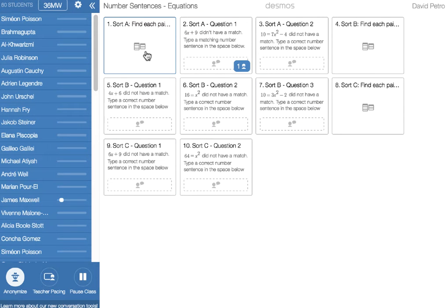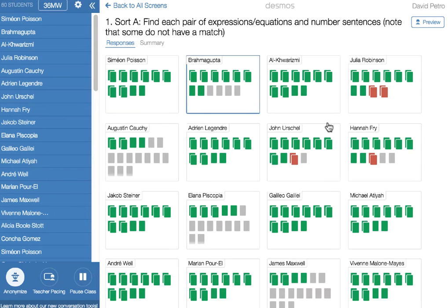The difference here is that when you look at the screens, what you're going to see is the card sort screen. If you have pairs of green cards, those are matched correctly. If you have gray cards, that means those cards aren't matched up with anything yet.